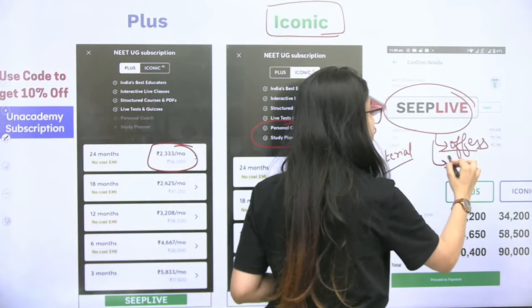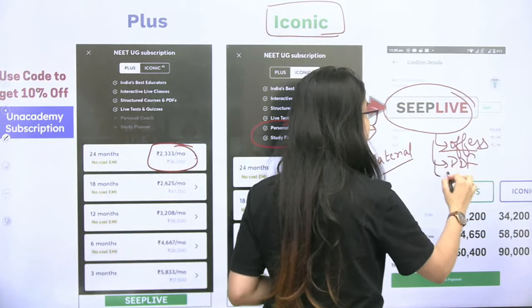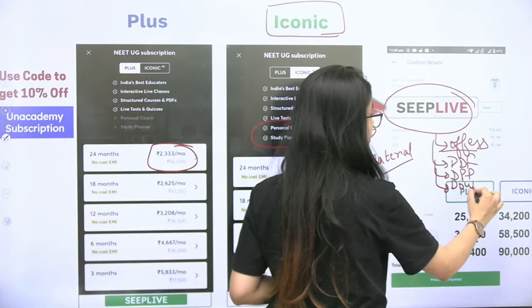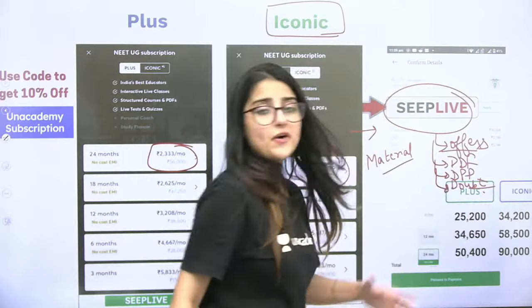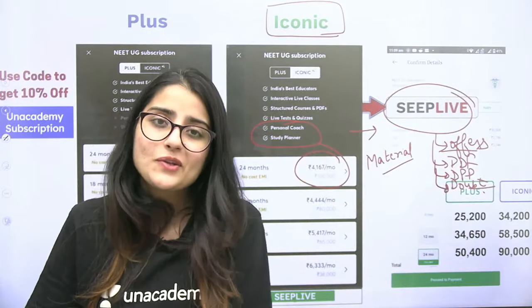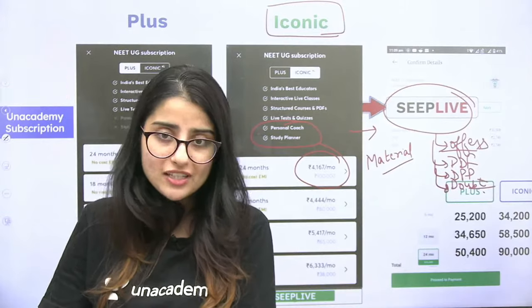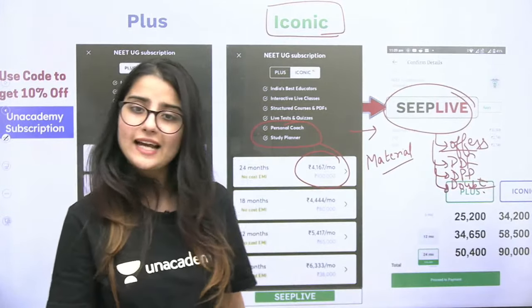If you use the code SEEPLIVE, then you will get all the offers. Also you will get personal guidance, PDFs, chapter-wise DPPs, and daily doubt solving. And you will get handwritten notes. So we will see you in the next session in which we discussed oogenesis this morning. Take care and bye-bye.